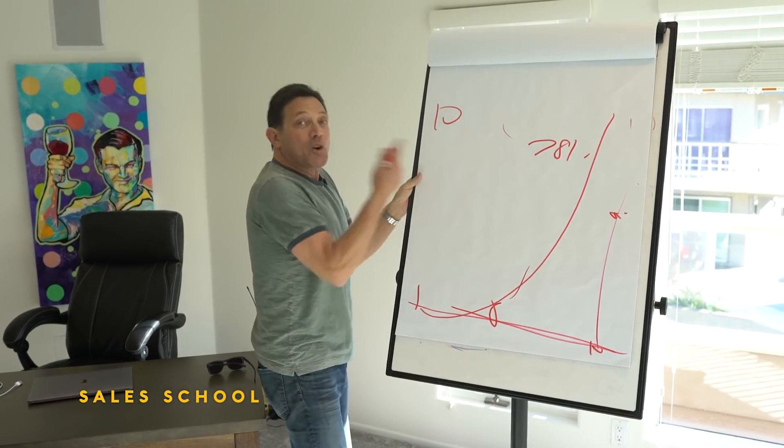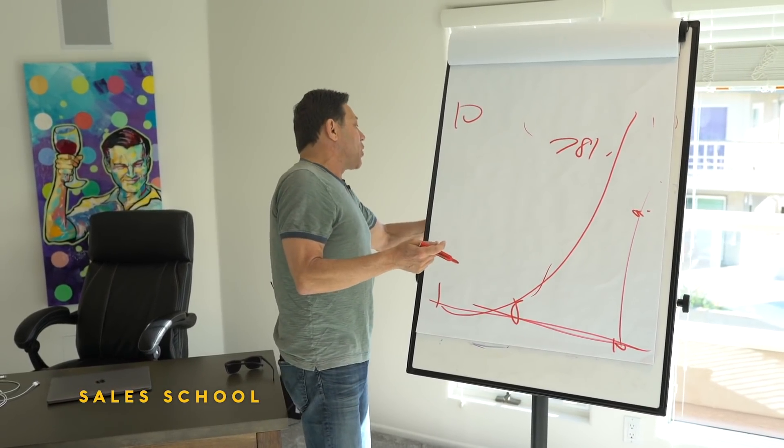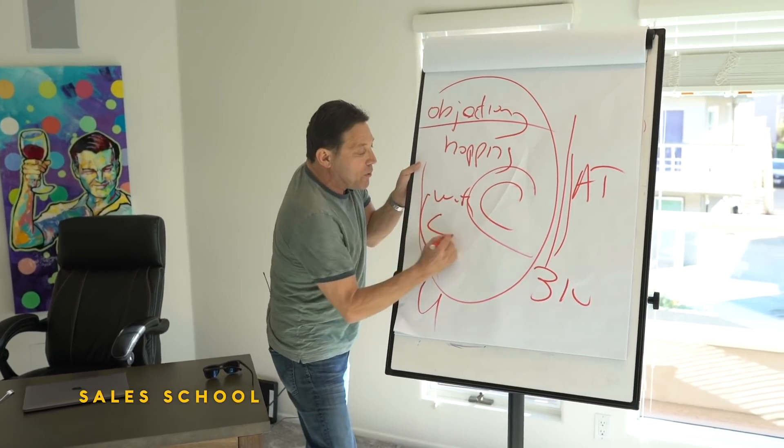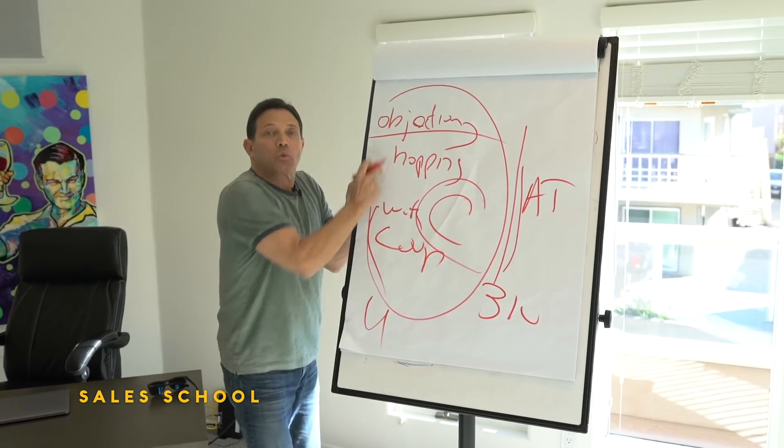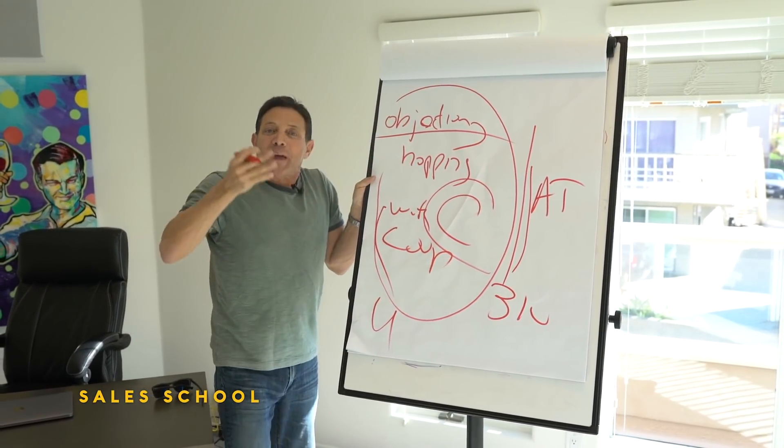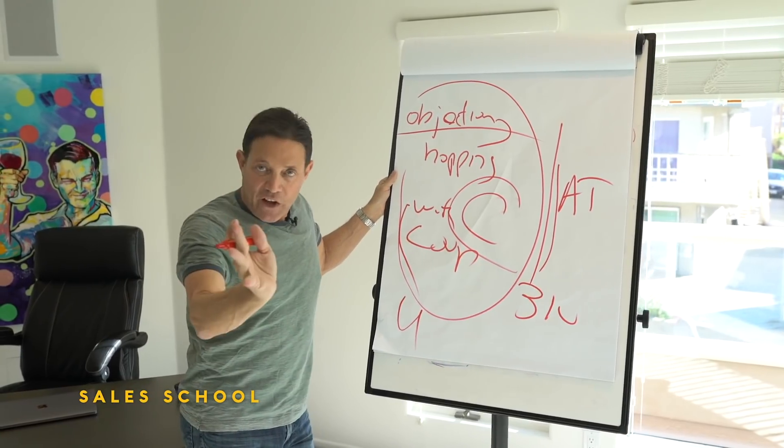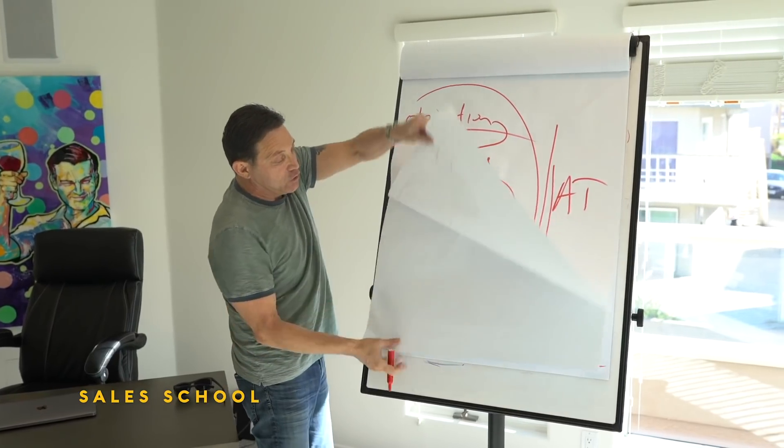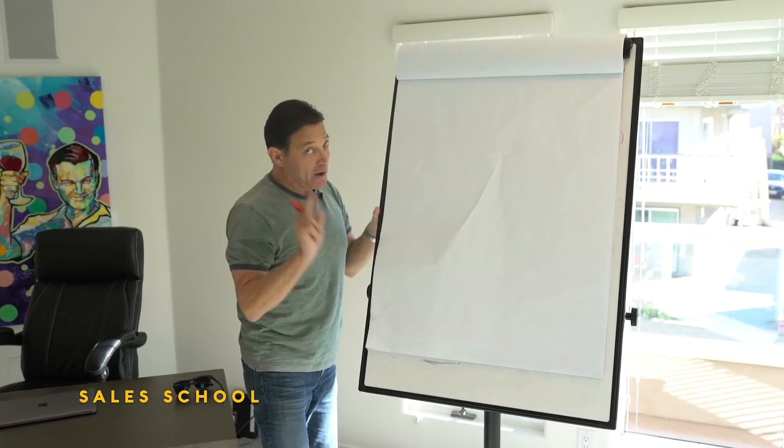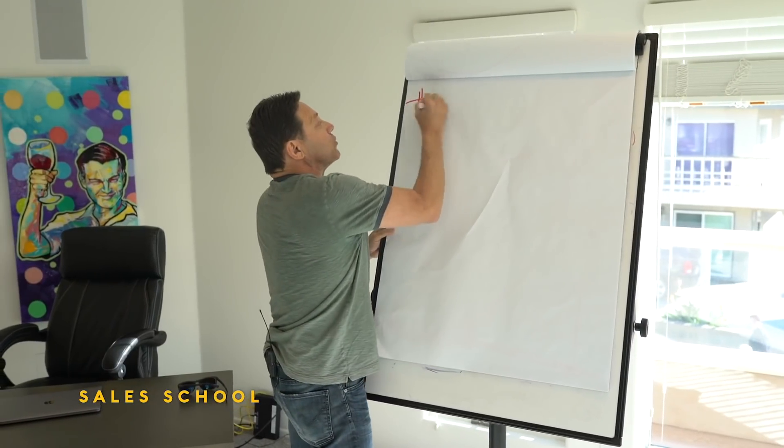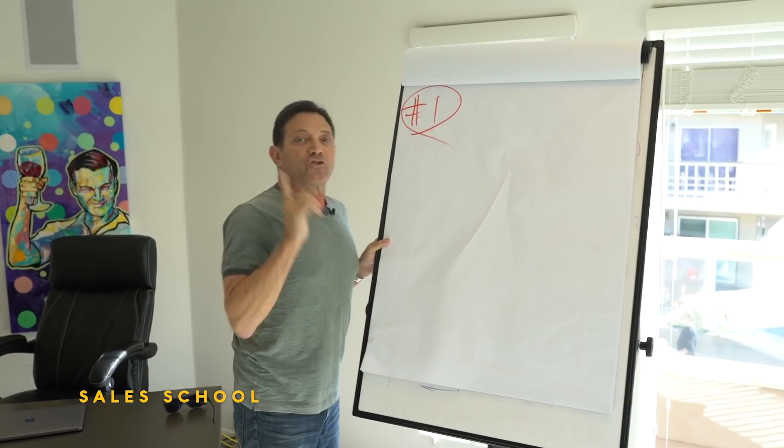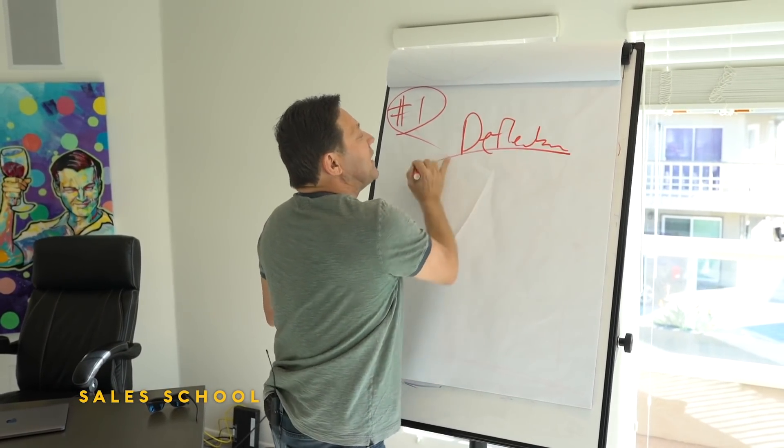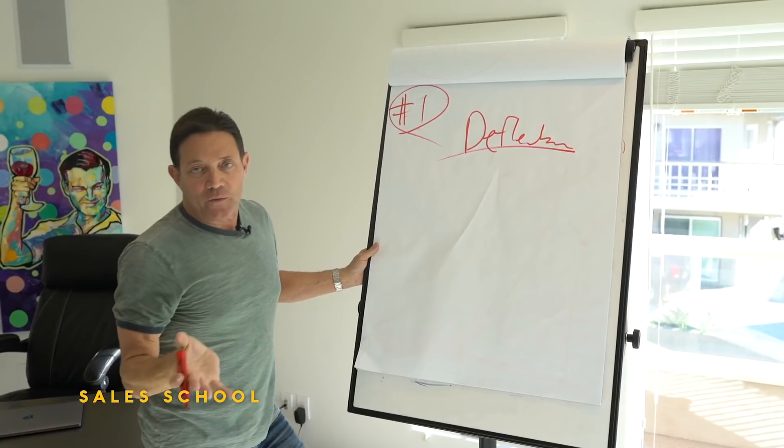Going back to what I first said: a loop happens in response to an objection. So when someone gives you an objection, what's the first thing you do? I'll show you with your initial loop, loop number one.